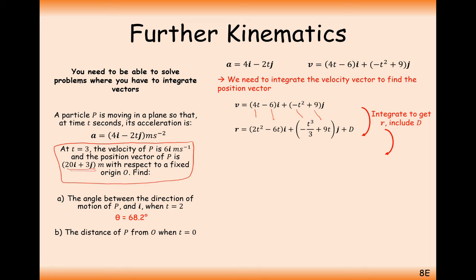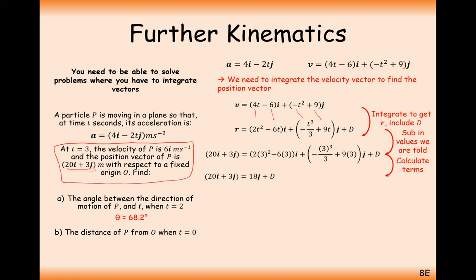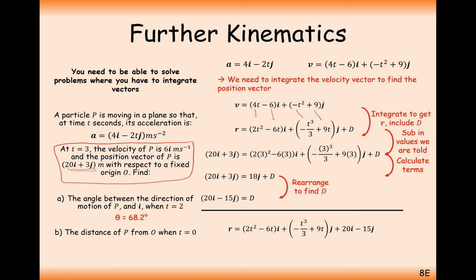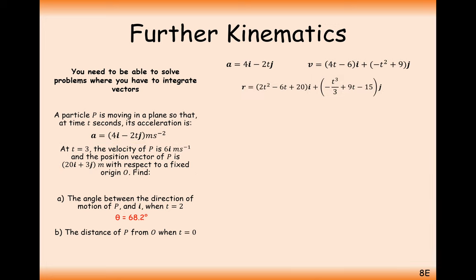To find D, we use the given information: when t equals 3, the position vector is 2i plus 3j. Substituting t equals 3 and position vector 20i plus 3j into the expression, simplifying and moving everything to one side gives D equals 20i minus 15j.